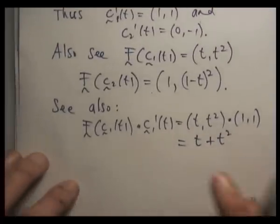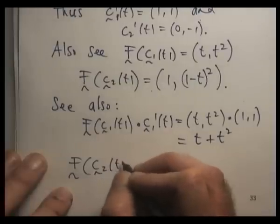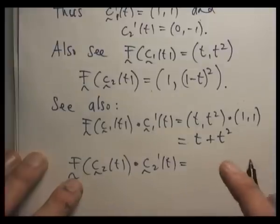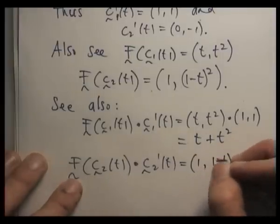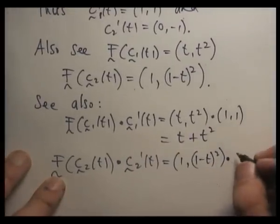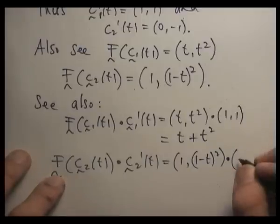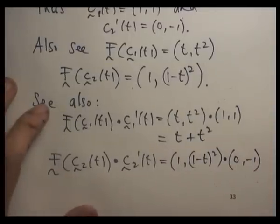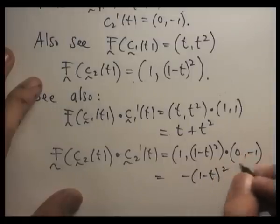And doing the other dot product in a similar fashion. So that's going to be (1, (1-t)²) dotted with (0,-1). So we're going to get something like minus (1-t)².